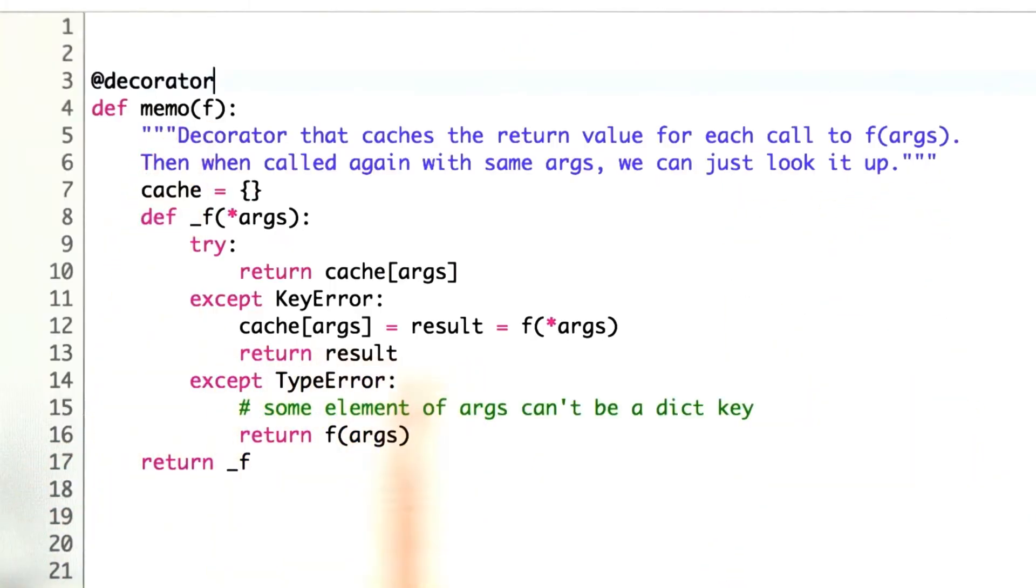Here's the memo decorator. The guts of it is the same as what I sketched out previously. If we haven't computed the result already, we compute the result by applying the function f to the arguments. It gives us a result. We cache that result away. Then we return it for this time, and it's ready for next time. Next time we come through, we try to look up the arguments in the cache to see if they're there. If they are, we return the result.